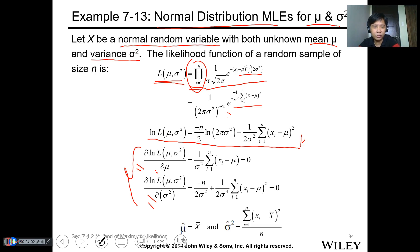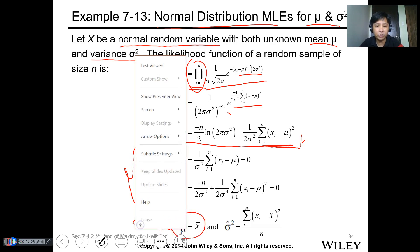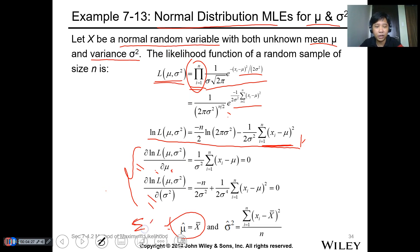When you take the first derivative, this term disappears with respect to mu. This becomes 1 over sigma squared times the summation equal to 0. Then first derivative by power. Solving for mu, you get mu equals the summation of x over n.